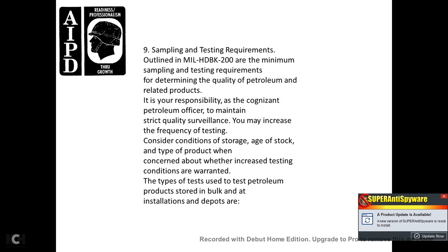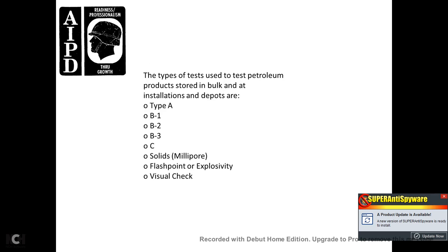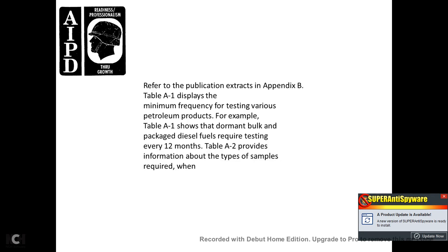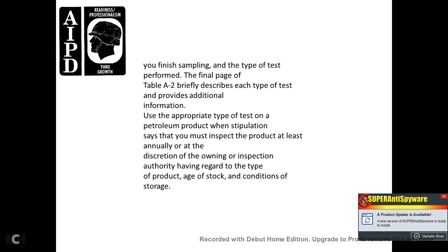9. Sampling and testing requirements. Minimum sampling and testing requirements are outlined in Military Handbook 200, for determining the quality of petroleum-related products. Responsible petroleum officers must maintain strict quality surveillance; they may increase the frequency of testing based on conditions such as storage age, type of product, and other conditions warranting increased testing. Types of tests used for petroleum stored in bulk at installations or depots include: Type A, B1, B2, B3, C, solid millipore, flashpoint, explosive, and visual checks. Refer to Appendix B — Table A1 displays the minimum frequency for testing various depot petroleum products; for example, dormant bulk and packaged fuels require testing every 12 months. Table A2 provides information on the type of samples required, the type of test to perform, and a brief description of each test type.